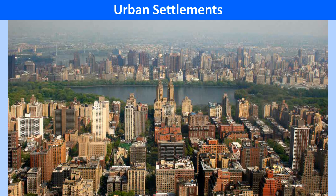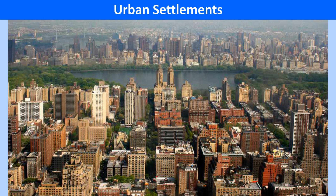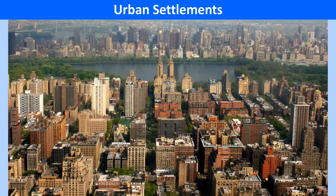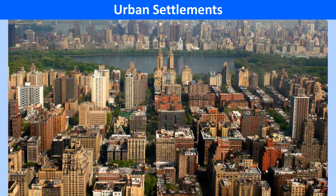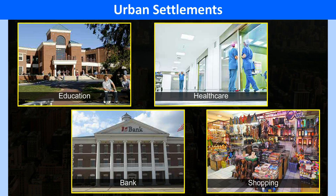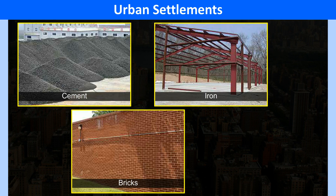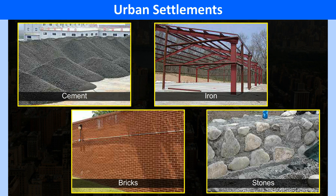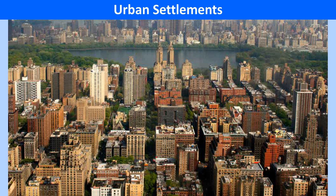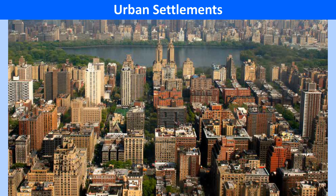Urban Settlements. Urban settlements may be huge in size compared to rural settlements. These are characterized by a plethora of services and amenities such as education, health care, banks, shopping, etc. Building materials like cement, iron, bricks and stone are extensively used irrespective of the environmental conditions. Urban settlements are generally classified on the basis of the economic activities they perform.